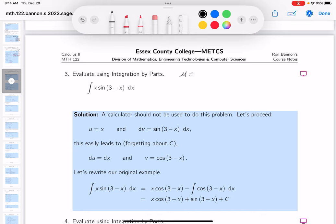So u equals x, du would be equal to dx. Let's see, dv would be equal to sine—a little tricky though, isn't it?—3 minus x dx.